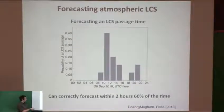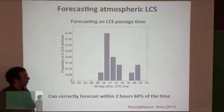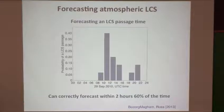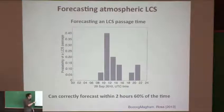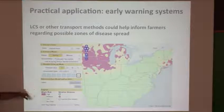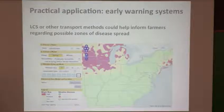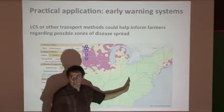Sixty percent accuracy isn't good enough for one-hour sampling resolution, but it's better than nothing. This shows probability of an LCS passage predicting up to 24 hours ahead. There's also speculation about LCS being related to temperature fronts, which we haven't yet explored but may interest meteorologists. Our eventual goal is an early warning system where LCS or other transport methods could inform farmers about possible zones of disease spread — or regions where they don't need to worry.